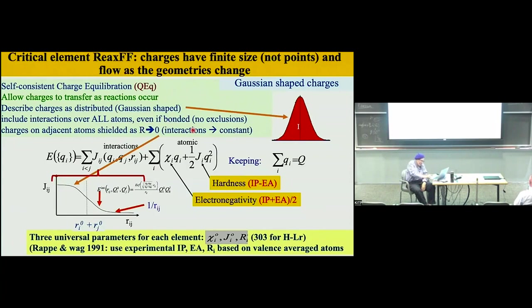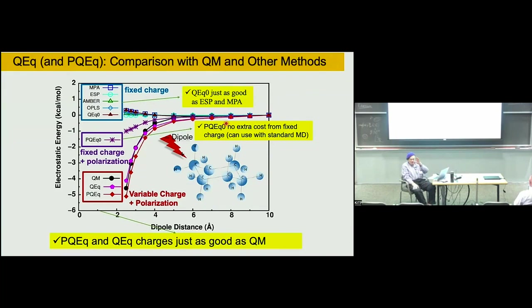We get the charges by a method we developed about 20–30 years ago called QEq, which uses the atomic electronegativity and hardness to predict the charge as a function of time. We do that every femtosecond, and it works pretty well. For example, for cyclohexane, comparing how the charges interact with the surface against quantum mechanics gives pretty good agreement — normal force fields can't do that.